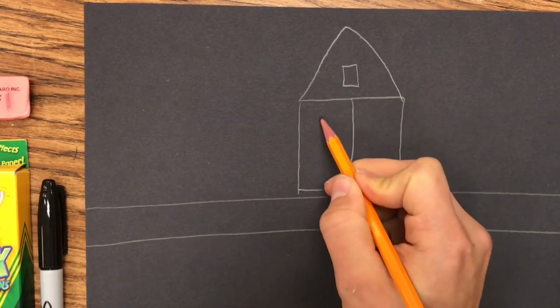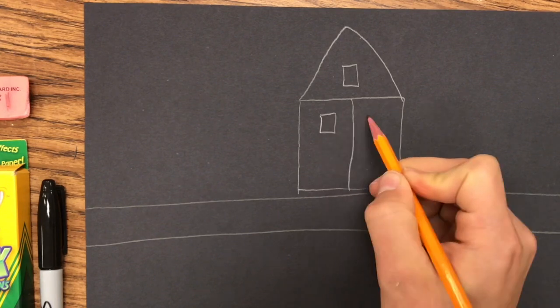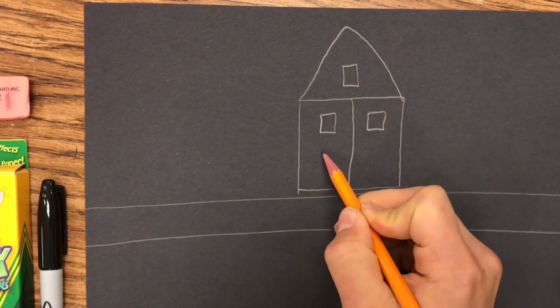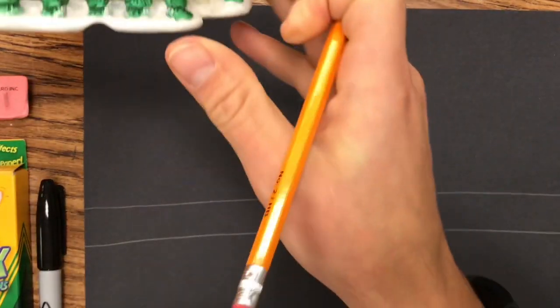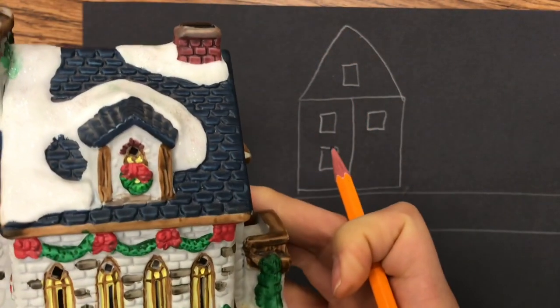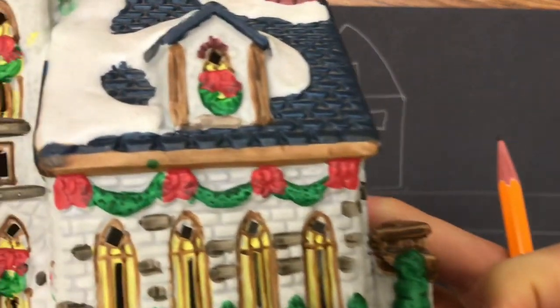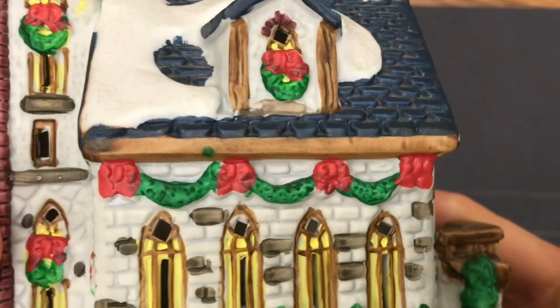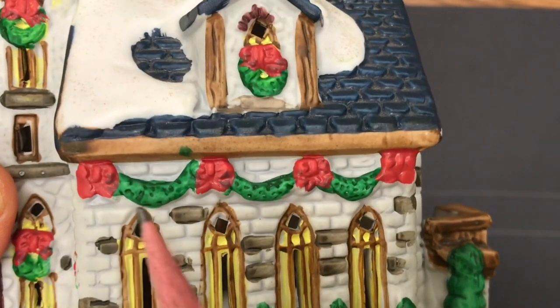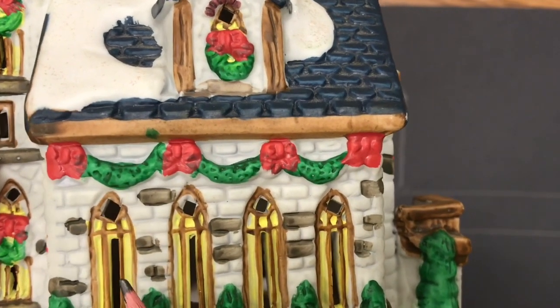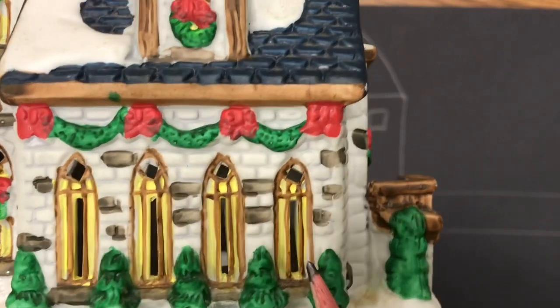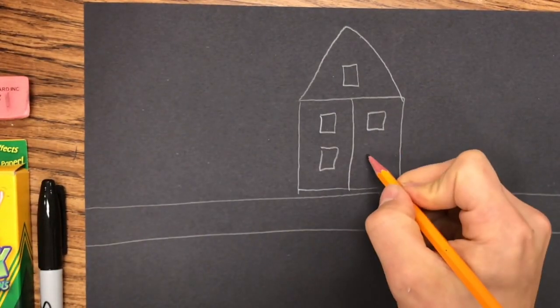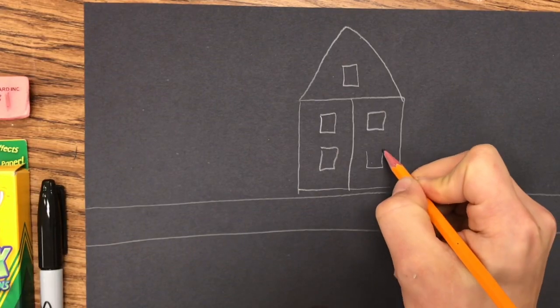You can always add some windows in there. The more details I think that you put on these, the better that they will look. Really, looking at them in class, you can start to pick out some of those cool details, whether it's the bricks on here or the little windows that have little designs, even the evergreen Christmas trees kind of around the sides.